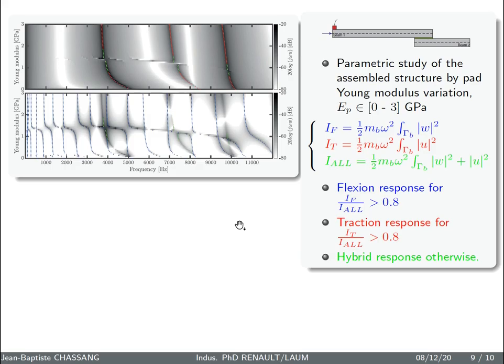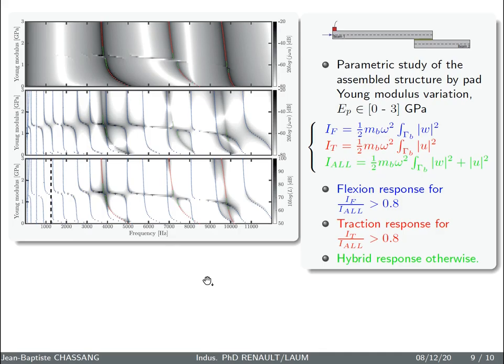The classification of the response is done using a kinetic indicator in pure flexion, traction or in a combination of the two movements. We also define a threshold around 0.8 in order to classify the responses in flexion, traction or in hybrid responses.